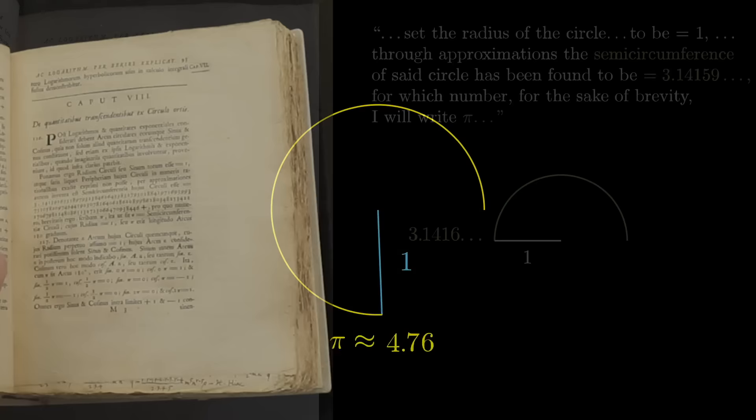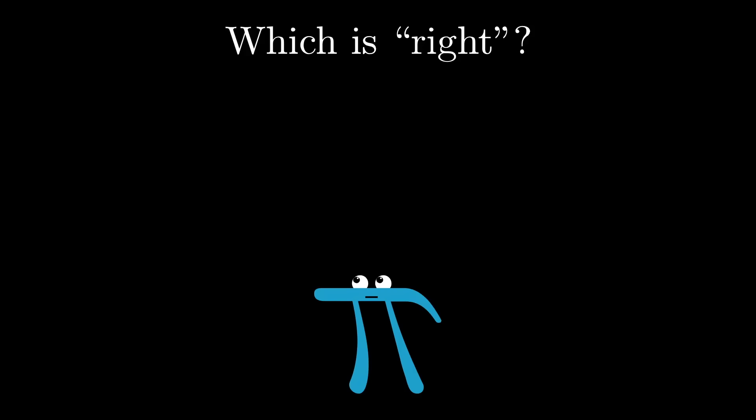For some problems, the quarter circle constant was most natural to think about. For others, the full circle constant. And for others still, say at the start of chapter 8 of his famous calculus book, maybe the half circle constant was most natural to think about.